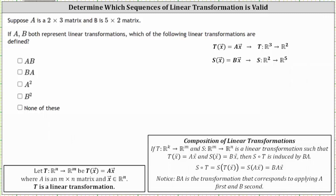Suppose A is a two by three matrix and B is a five by two matrix. If A and B both represent linear transformations, which of the following linear transformations are defined? Let the transformation associated with matrix A be T(x) = Ax. Because matrix A is a two by three matrix, T is a transformation from R3 to R2. Let the transformation associated with matrix B be S(x) = Bx. Because B is a five by two matrix, S is a transformation from R2 to R5.